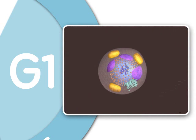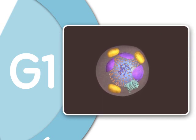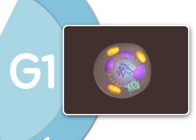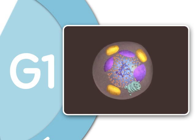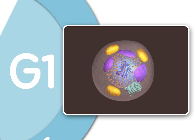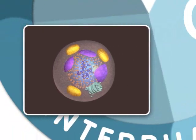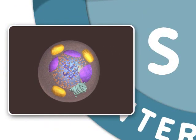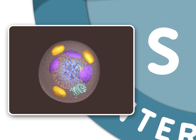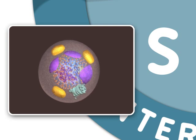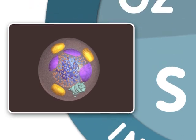G1, or GAP1, is the first growth stage of interphase. In G1, the cell grows to nearly its full size and performs many of its specific biochemical functions that aid the organism. Next is the S, or synthesis phase. This is an important stage because it is during the S phase that DNA in the nucleus is replicated.